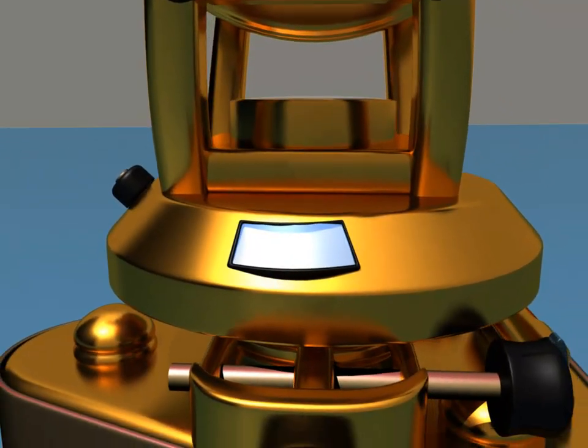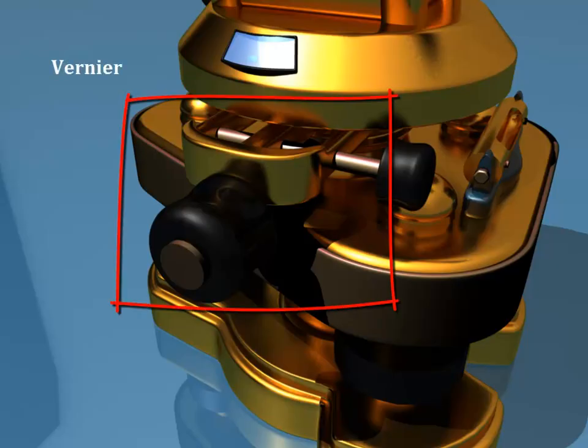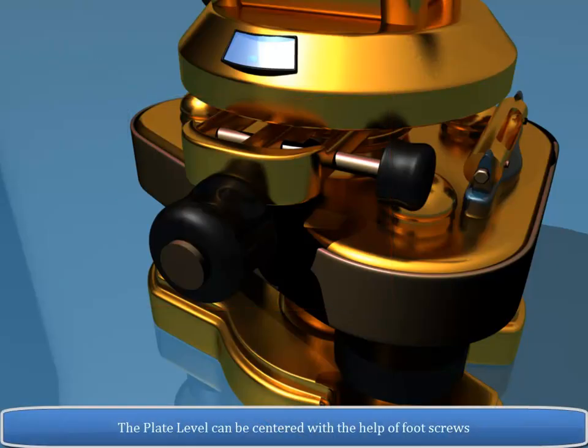The upper plate carries two plate levels placed at right angles to each other. One of the plate level is kept parallel to the trunnion axis. The plate level can be centered with the help of foot screws.